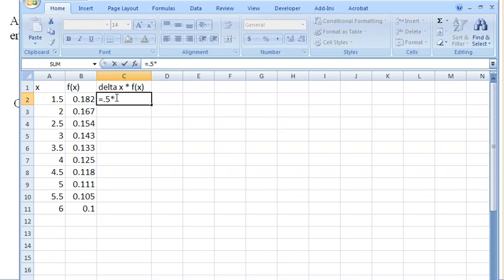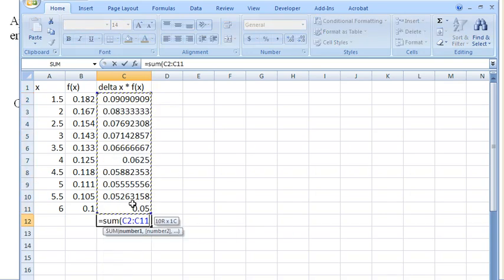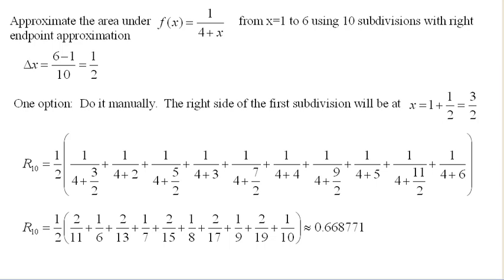And then I can multiply my delta x of 1/2 times my function values, pull those down, and then say let's add those up. So if you know how to use Excel, that would be one way to do it. If you don't, that's okay. We have other technology.